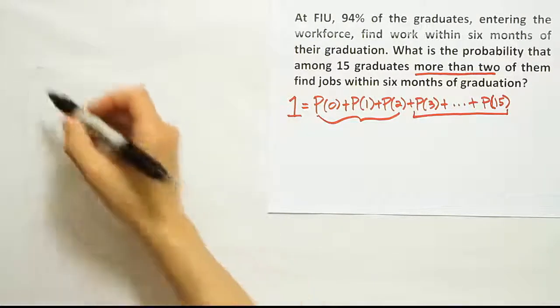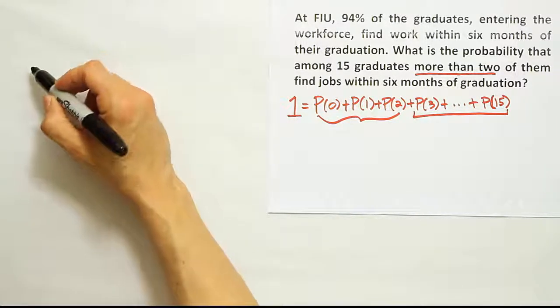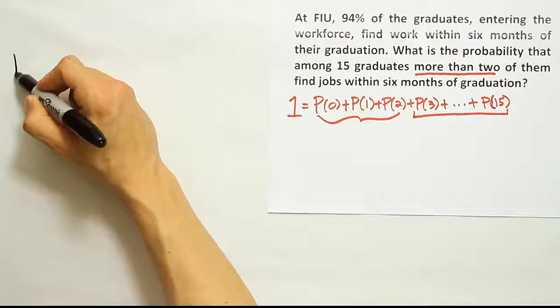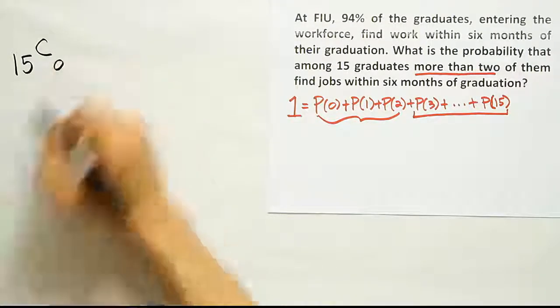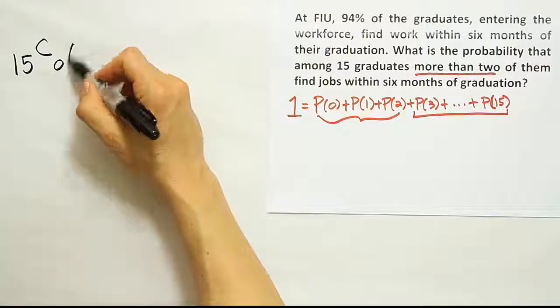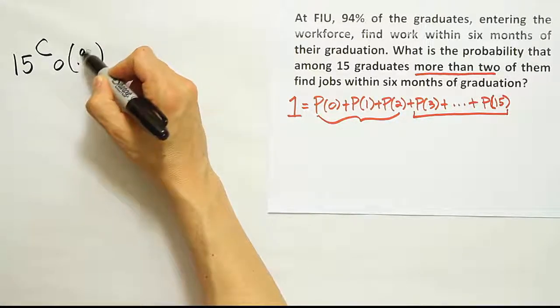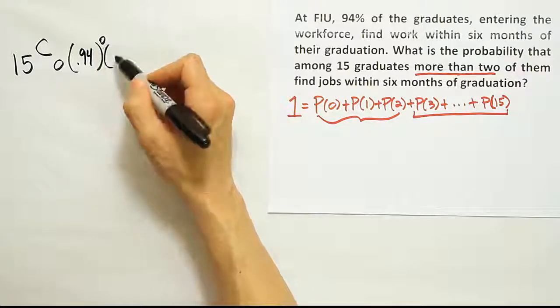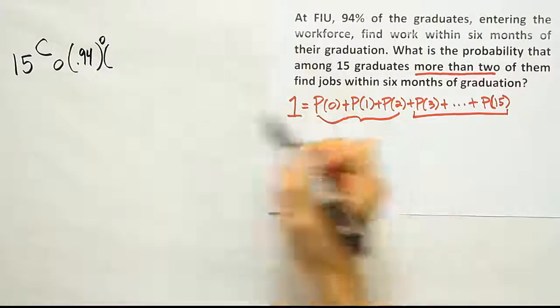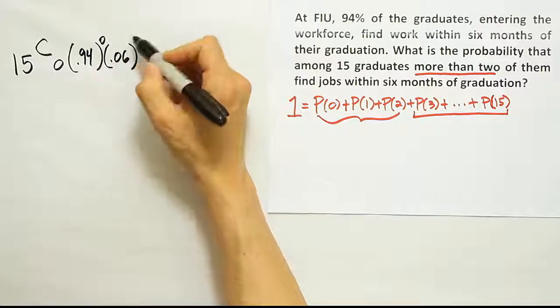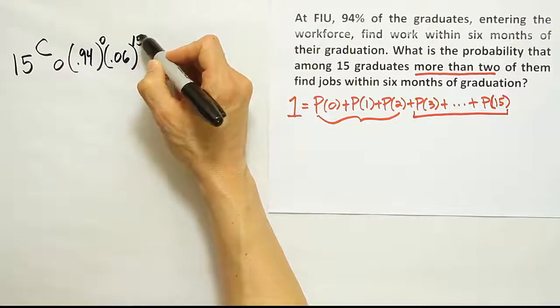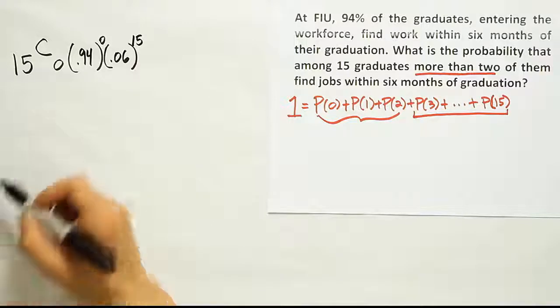We're going to take the first one, which will be out of 15 graduates. We're going to choose zero of them to find a job. The probability they find a job is 0.94, but no one is going to get a job in this scenario. That's the p equals zero case, right? And then the other 6% will have that to the 15th power because all 15 of the graduates will not find jobs. That's one scenario.